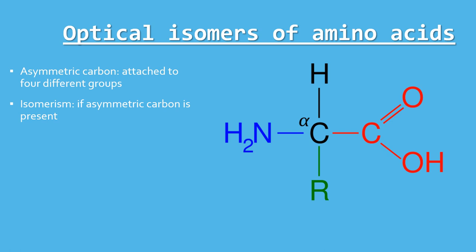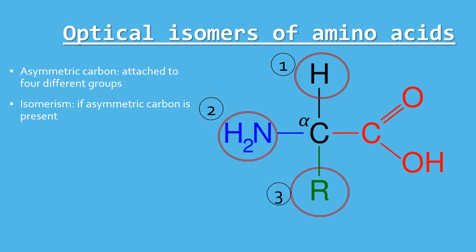Here the optical isomers of amino acids are discussed. If a carbon atom is attached to four different groups, it is asymmetric or chirogenic and therefore exhibits optical isomerism. The amino acids, with the exception of glycine, possess four distinct groups — hydrogen, amino group, R group as a side chain and carboxyl group — held by the alpha carbon. Thus all the amino acids have optical isomers, and these isomers are depicted as L and D amino acids.